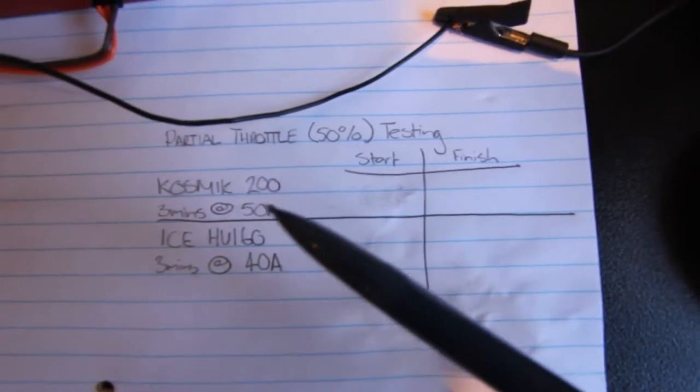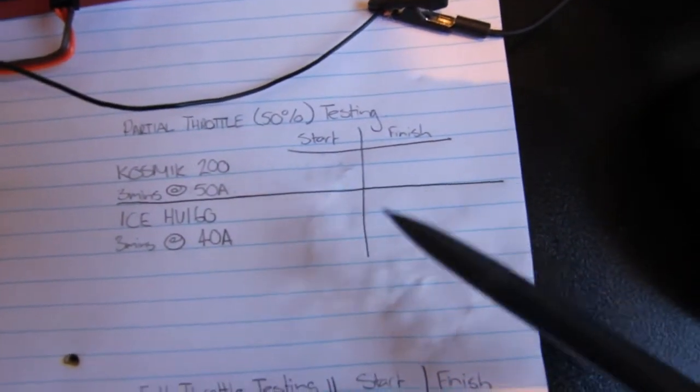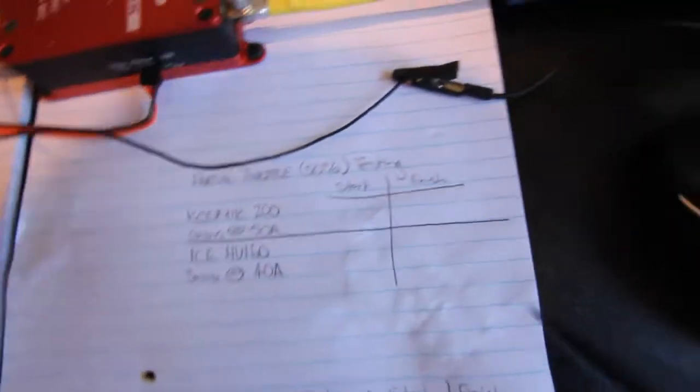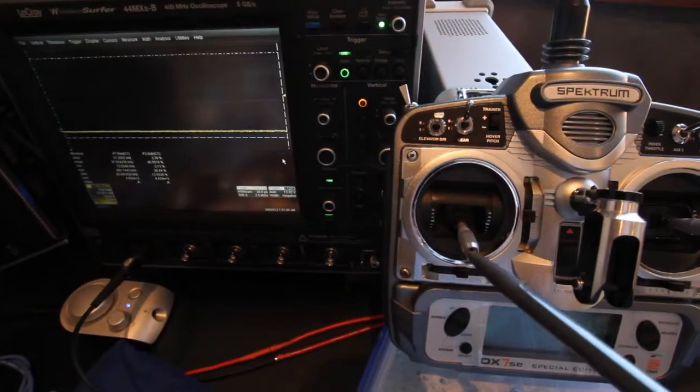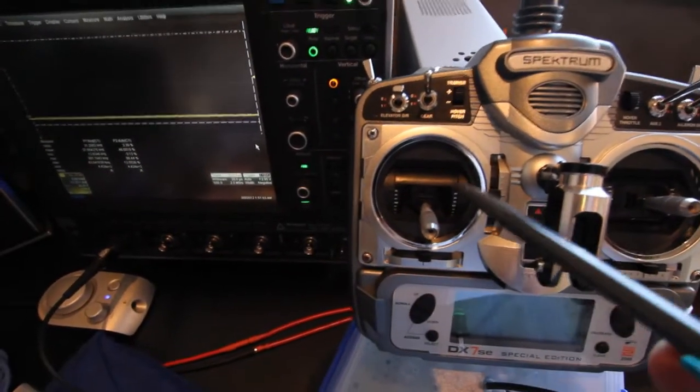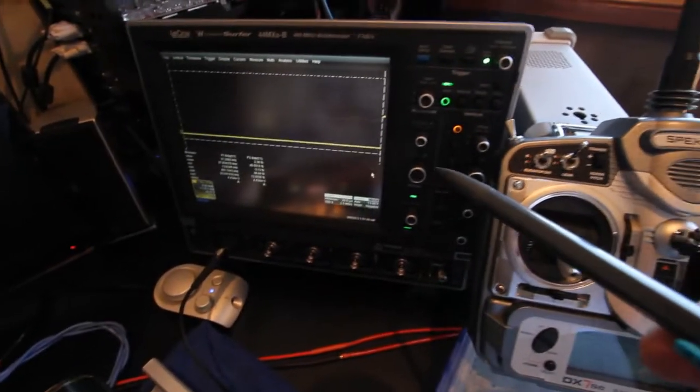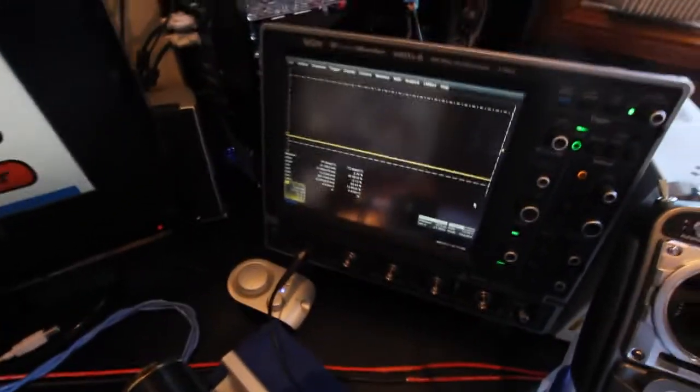The test duration will be 3 minutes. I'll be measuring the start and finish temperatures just like before. And I'll be setting the 50% by looking at the actual phase voltage and setting it to a 50% duty cycle, as opposed to just setting my transmitter stick to 50%, because sometimes 50% stick does not correspond to 50% throttle. So I'm going to be looking at the phase voltage to set the 50%.